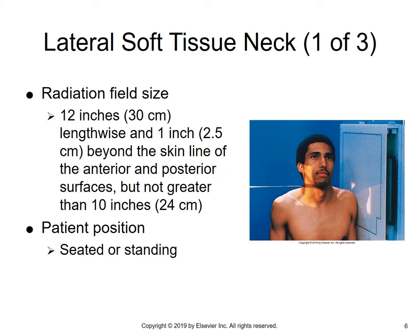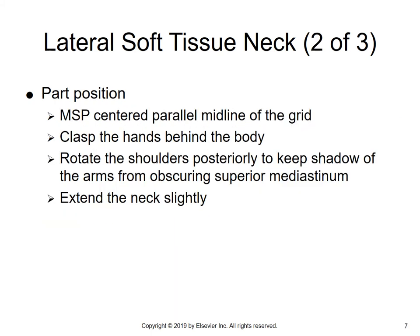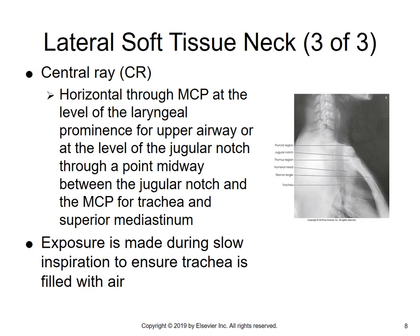For the lateral soft tissue neck, 12 inches and then one inch beyond the skin line again of the anterior and posterior surfaces. Patient can be seated or standing. The MSP is centered parallel to the midline of the grid since it's a lateral position. Patient clasps their hands behind their body to bring out the neck area. Rotate the shoulders posteriorly to keep the shadow of the arms from obscuring the superior mediastinal area, and then extend the neck up slightly. The central ray is horizontal through the mid-coronal plane at the level of the laryngeal prominence for the upper airway, or at the level of the jugular notch through a point midway between the jugular notch and the trachea and the superior mediastinum.